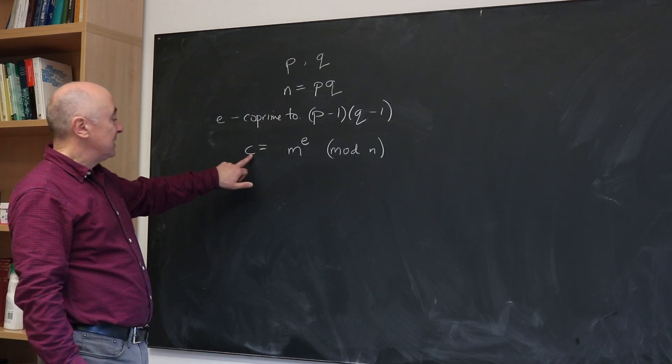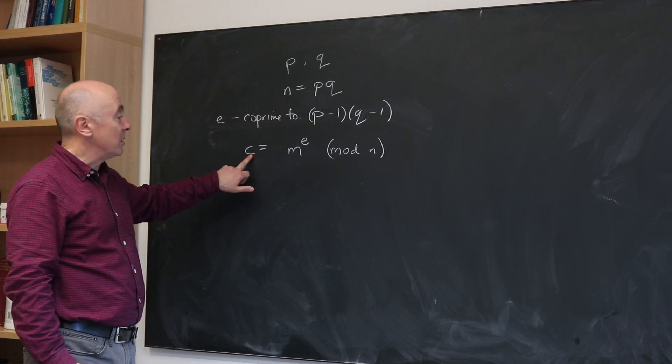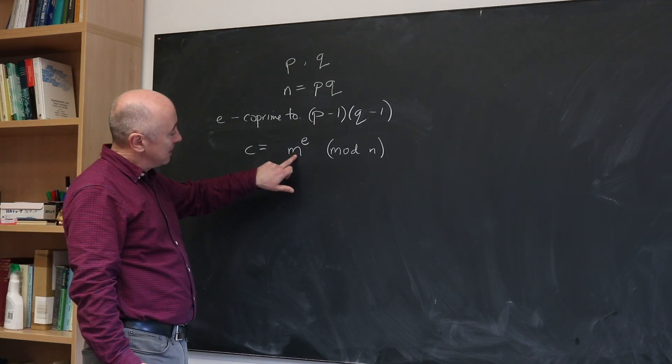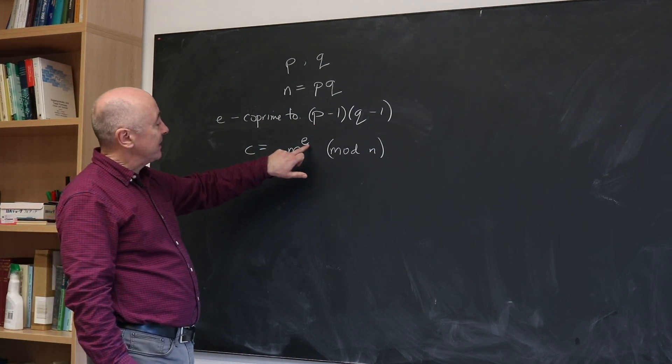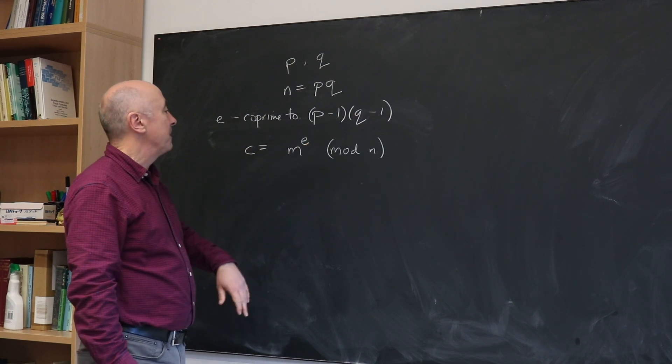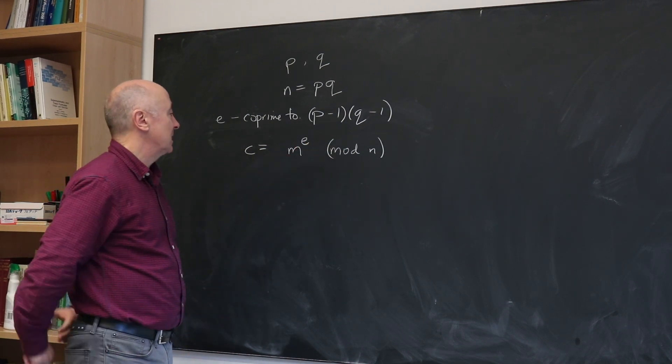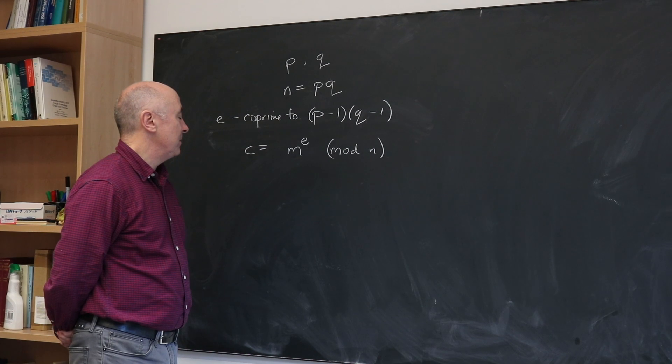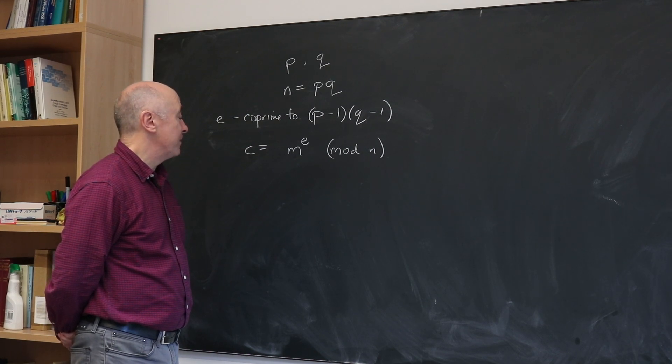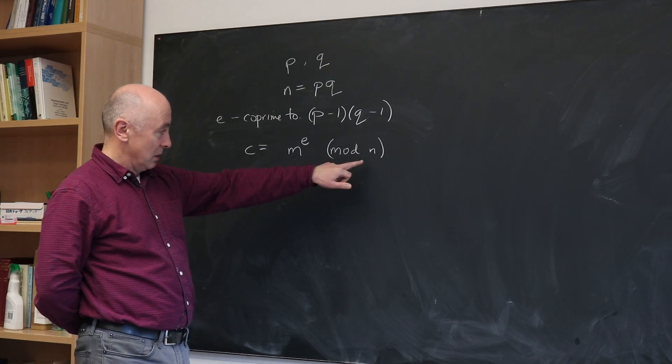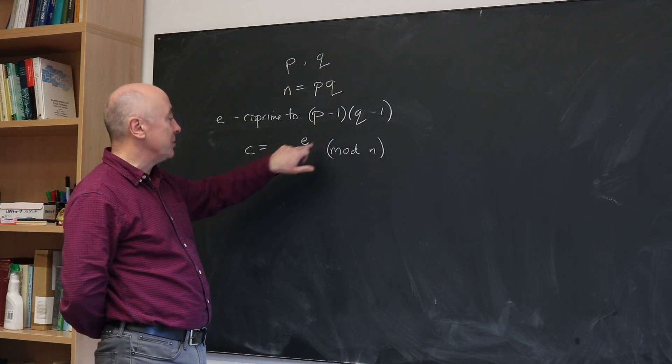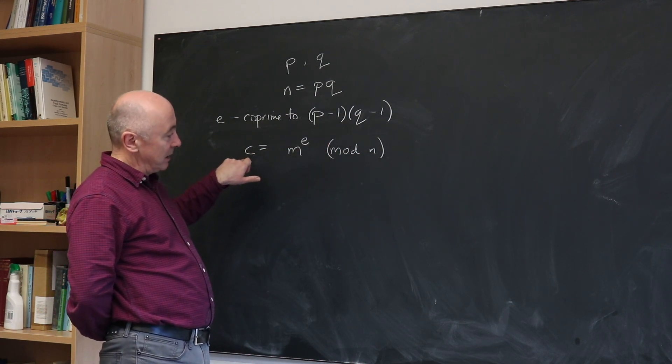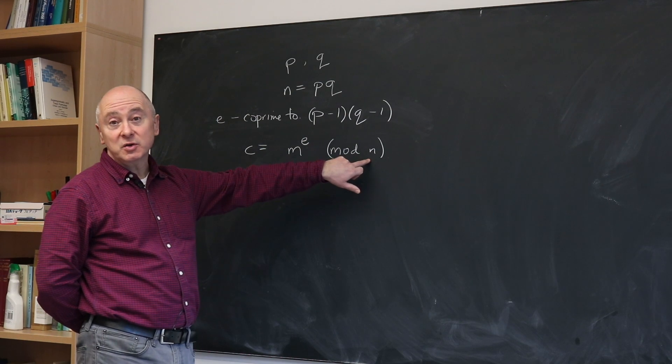We'll call this number C. This is the encoded message. So you've taken the number you want to encode, you multiply it by itself E times, and you do this modulo N, so you subtract off multiples of N until you get a number C that lies between 0 and N minus 1.